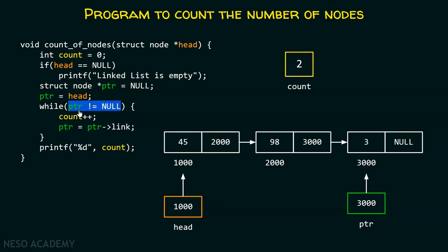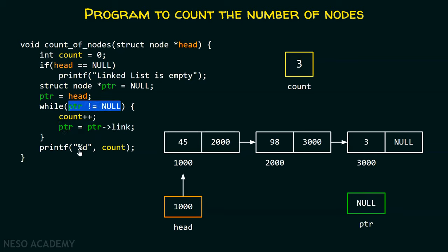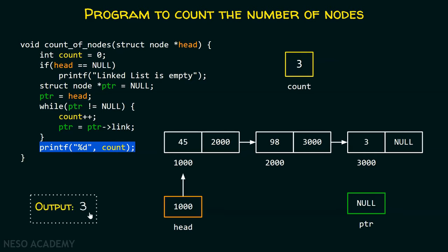We will again check this condition: is ptr equal to null? Still it is not equal to null. We get inside, increment the count — two gets replaced by three. Then we access ptr->link, which is the link part of this node and contains null. So this gets replaced by null and now ptr contains null. We check again: is ptr equal to null? Yes, ptr is equal to null. So we get outside of this loop because the condition ptr not equal to null is false. We print the count, which is three. So the output is three.